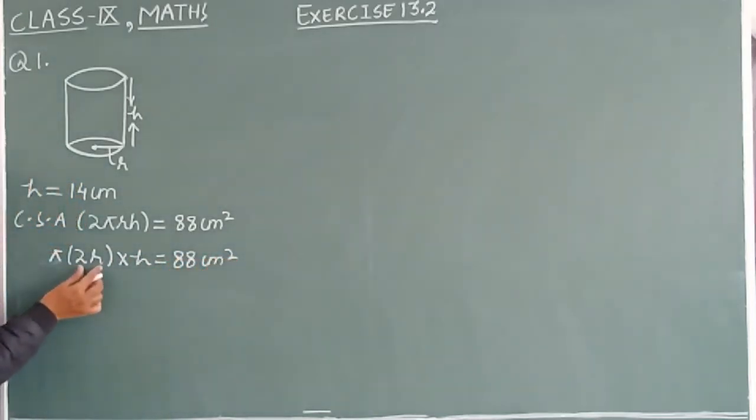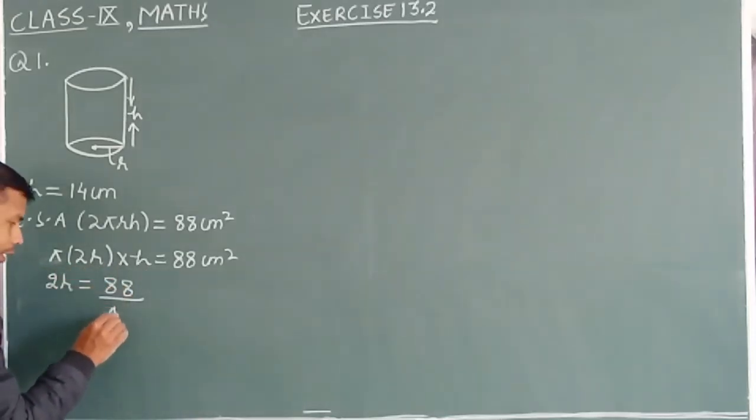Where this 2r is diameter, so that 2r we have 88 divided by pi h.